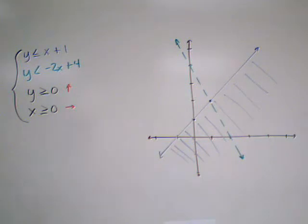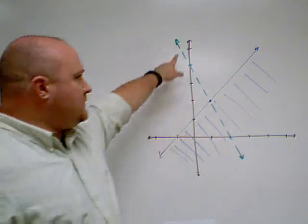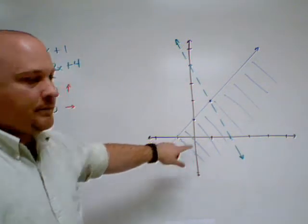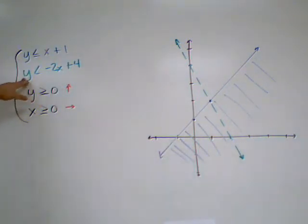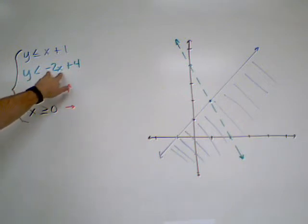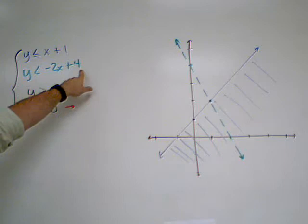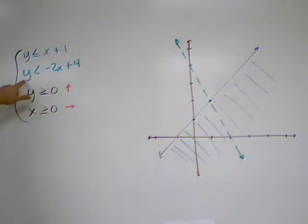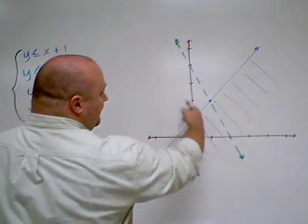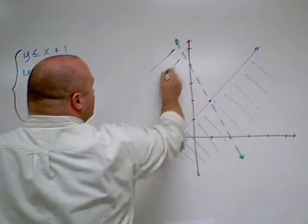Now, with my green line, I'm going to do the same thing, because here's my green line and the origin is still here. So zero is that less than negative two times zero, which is zero plus four. And it is, because zero is less than four. So from my green line, I'm going to shade this direction.